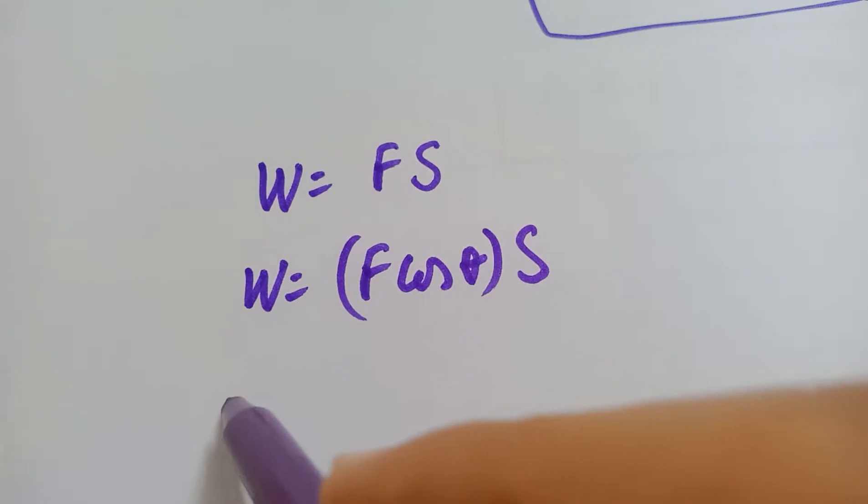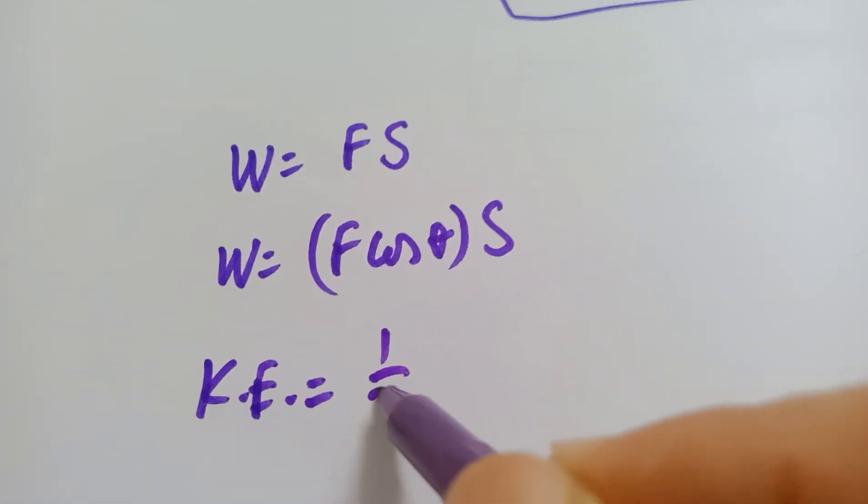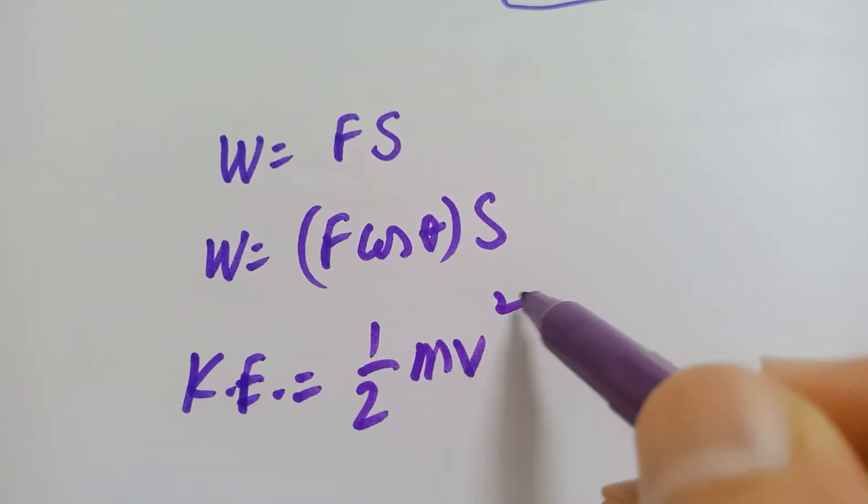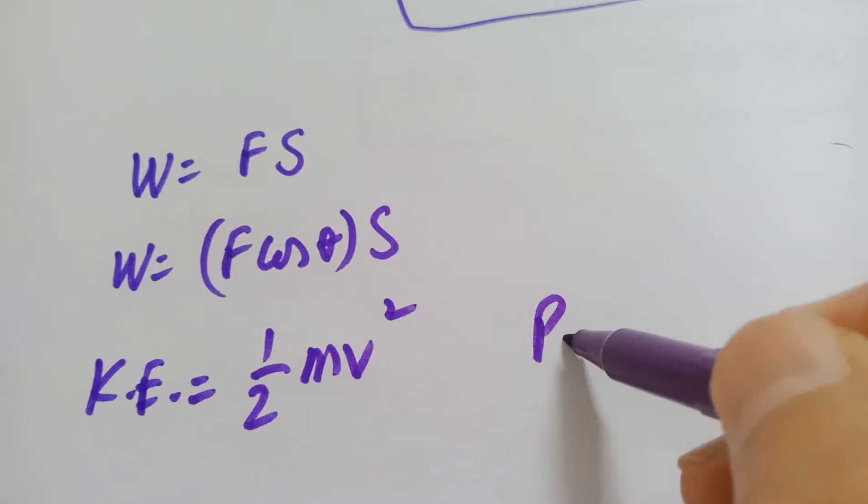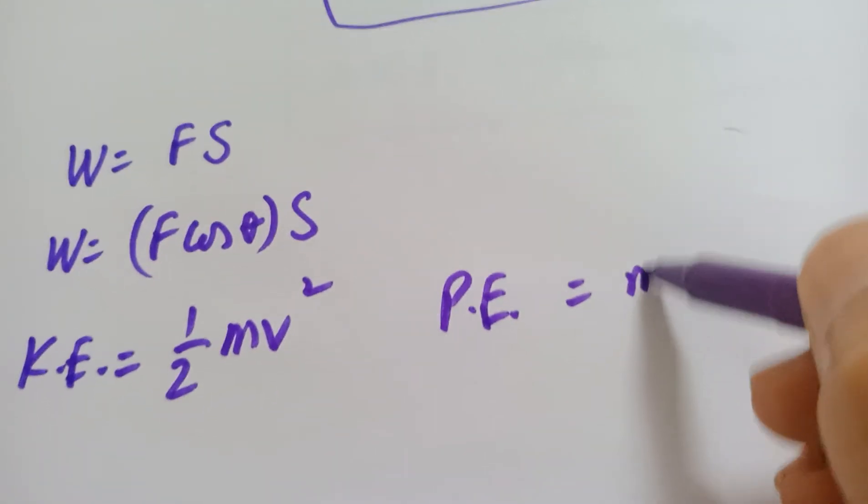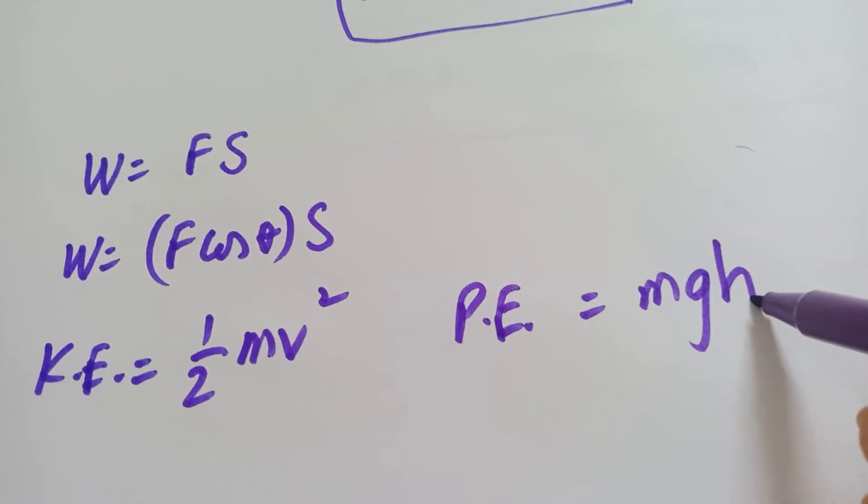Then you have the formula for the kinetic energy that is half M V squared. Then you have the formula for the potential energy that is going to be M G H.